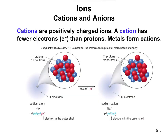A cation has fewer electrons than protons — or more protons than electrons — and is formed by losing an electron. If we look at the sodium atom and write out the electron configuration: 1s², 2s², 2p⁶, 3s¹ — there's one electron in the outer shell. Another way of saying that is there's one valence electron. That valence electron is going to be lost.